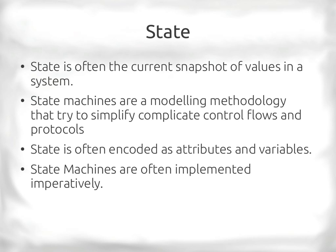Usually when we model state, we encode it as attributes or variables. That can lead to giant conditional statements where we're checking: are we here, expecting this, but only if we've seen this before? They get very complicated. State machines are often implemented imperatively in a while loop, checking flags like a 'done' flag to finally exit.